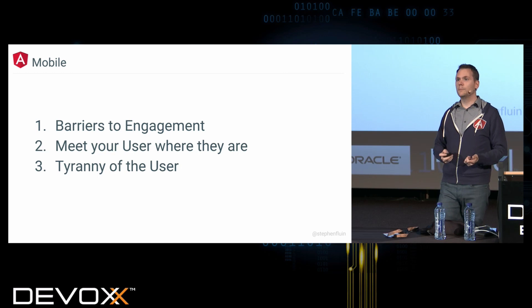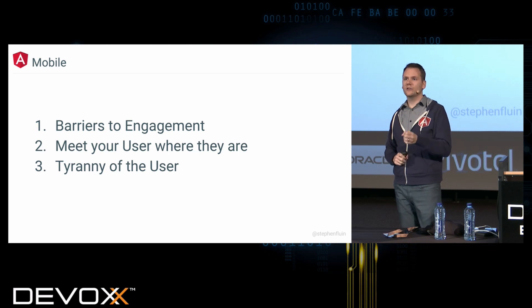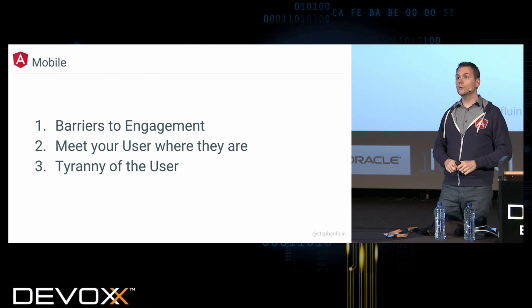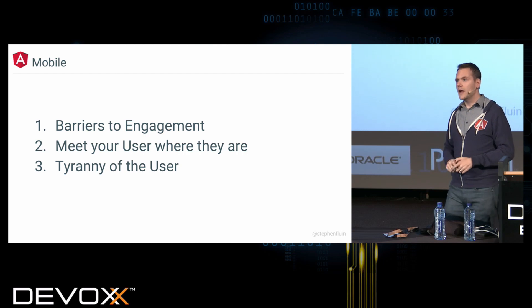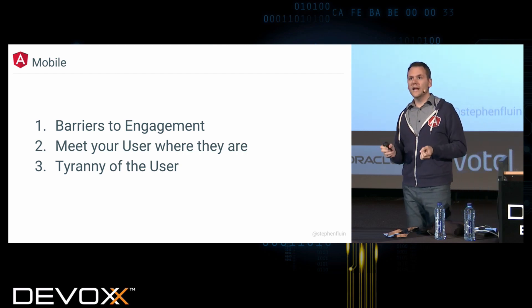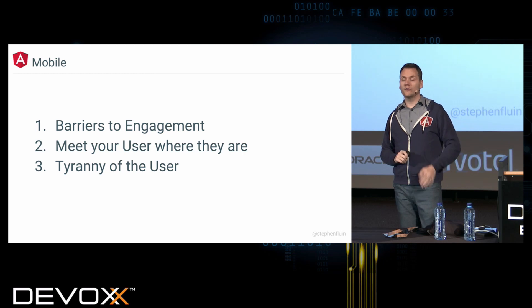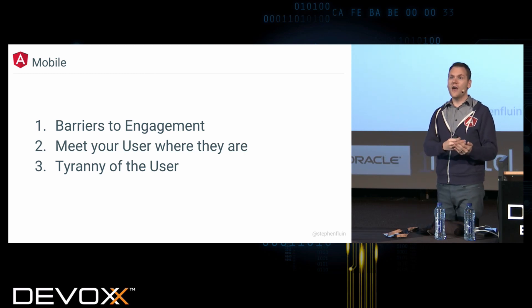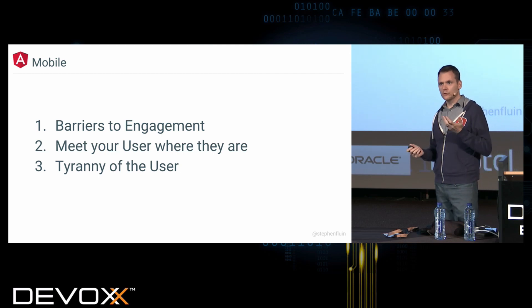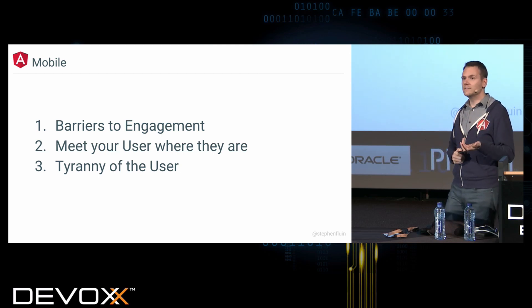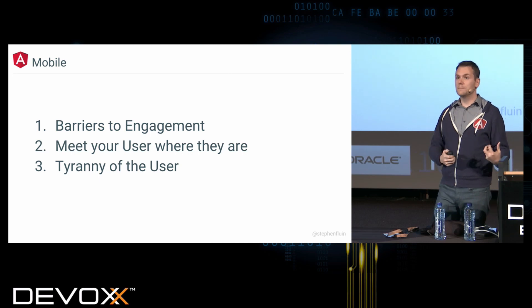I talk about this idea of what I call barriers to engagement — a gap between when you think about wanting to do something and when you're actually able to take action. A few years ago, before I joined Google, I was a big fan of Google Glass and wore it for about three years. The primary reason was that the barriers to engagement were virtually non-existent. To send a text message on your phone, you have to pull it out, unlock it, launch an application — I've timed that and it takes about 14 seconds. Whereas on Google Glass, that takes merely under five seconds.